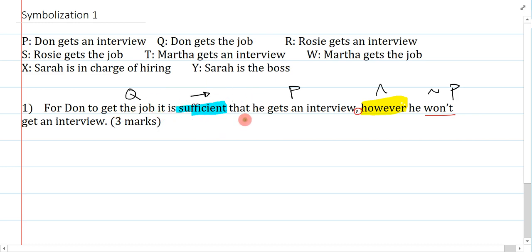For Don to get the job, it is sufficient that he gets an interview. So P is the sufficient condition for Q. I put that in brackets because I want the main connective to be the however, because that's the part with the comma, that's the break that binds everything. He won't get an interview. That's it. So pretty straightforward question. Worth three marks on a test.